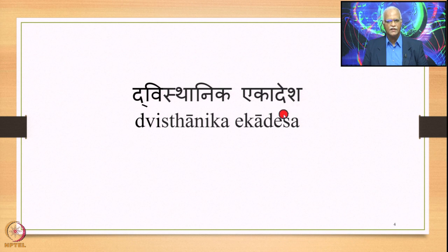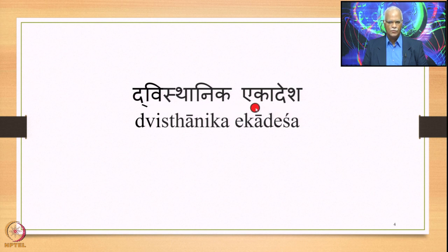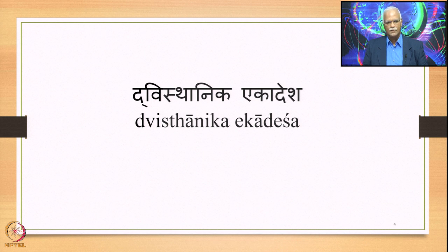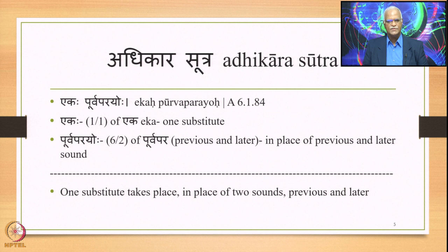We are currently studying Dwisthanika Ekadesha, where we have two substituents and one substitute. The first classification, Ekasthanika Ekadesha, has one substituent and one substitute. This Dwisthanika Ekadesha is stated by the Adhikara Sutra Ekapurwaparayoho, which is 6.1.84.